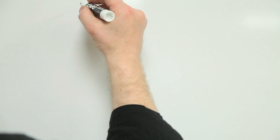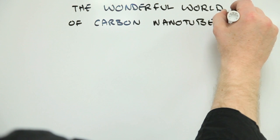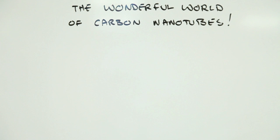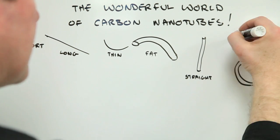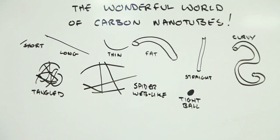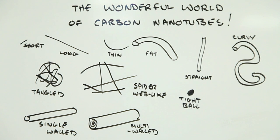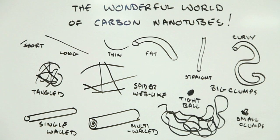The trouble is carbon nanotubes are not just carbon nanotubes. They might be short, long, thin, fat, straight, curvy, tangled, spiderweb-like, bunched up in a tight ball, single-walled, multi-walled, big clumps, small clumps, or almost any combination of the above.